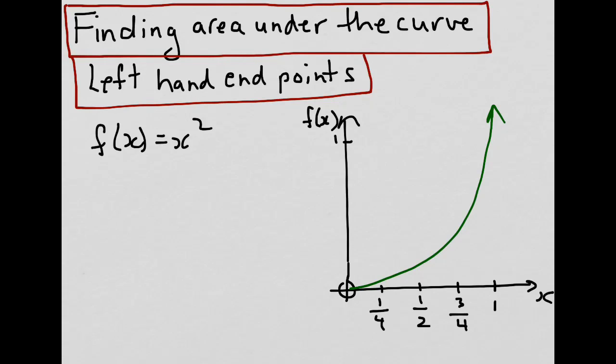In this example, we're going to use the left-hand endpoints. So what we do is we find the left-hand endpoints on the curve for each of the intervals, and then make a series of rectangles with the adjacent sub-intervals.